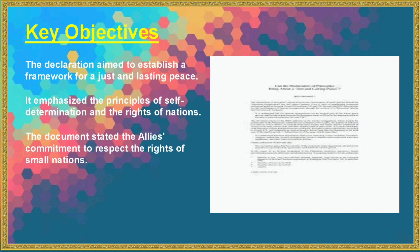The Declaration aimed to establish a framework for a just and lasting peace. It emphasized the principles of self-determination and the rights of nations. The document stated the Allies' commitment to respect the rights of small nations.